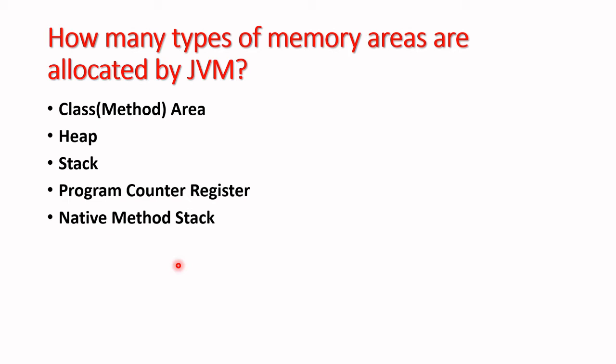We have five types: class area, heap, stack, program counter register, and native method stack. These are the memory areas allocated by the JVM for the program and application to execute successfully. Let's understand them one by one.